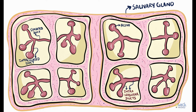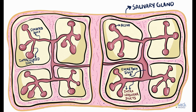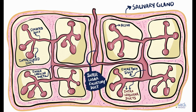Striated ducts continue to open into excretory ducts situated between lobules, called interlobular excretory ducts. These continue and join other interlobular excretory ducts to form interlobar excretory ducts, which in turn finally open into the main excretory duct of the salivary gland that is continuous with the oral cavity.